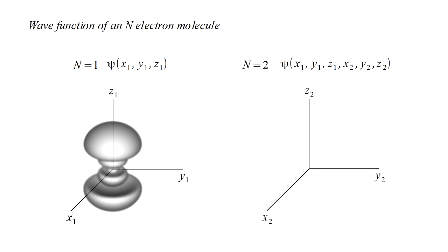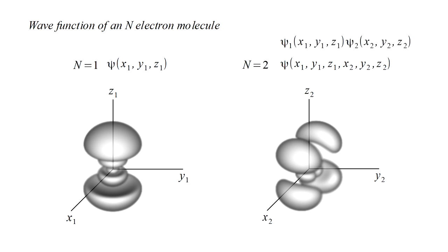It's tempting to think that this just means we need a second wave function for the second electron. Then the probability that electron one is in a first location and electron two is at a second location is simply described by the product of a probability factor for electron one times a probability factor for electron two.